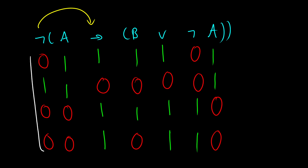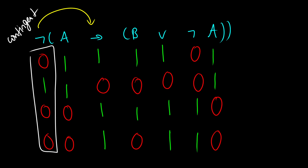Taking a look at this final column, we have both zeros and ones. Therefore, this is a contingent well-formed formula — it's contingent on the truth values of A and B.